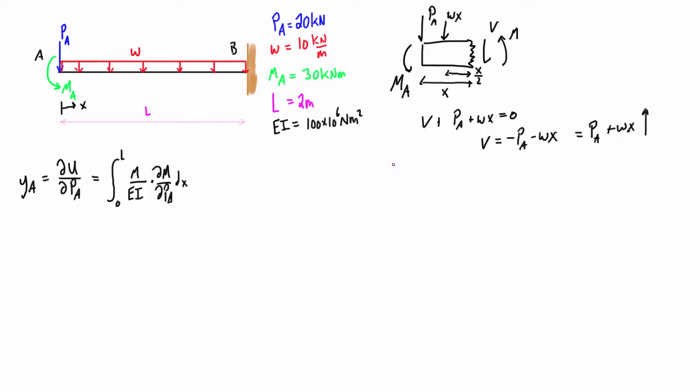So when we go to take the sum of moments, basically about some point, let's say the point right here, then we're going to get the expression for the internal moment, which we have going this way right now, that's all going to be equal to 0.